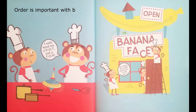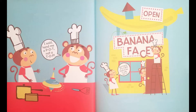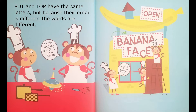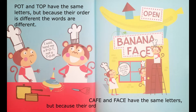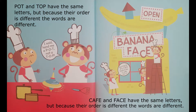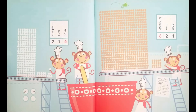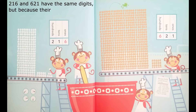Order is important with both words and numbers. Pot and top have the same letters, but because their order is different, the words are different. Café and face have the same letters, but because their order is different, the words are different. 216 and 621 have the same digits, but because their order is different, the numbers are different.